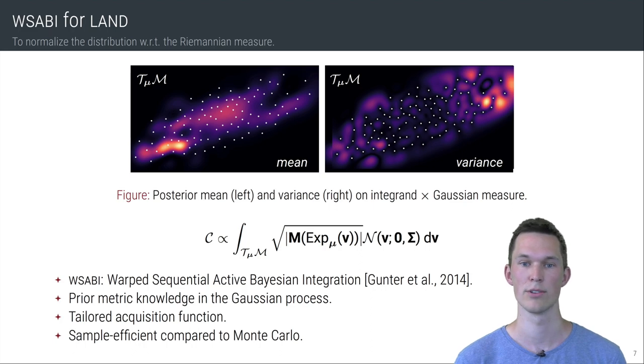This method returns a distribution over the integral and comes with an adaptive scheme to select informative nodes so that we can reduce the number of expensive geodesic computations to a minimum.